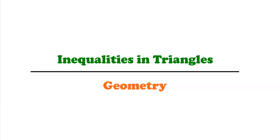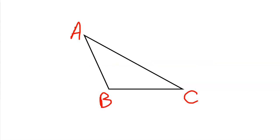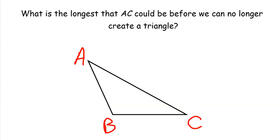The first question we're going to ask is one that is actually very foundational, and we haven't really asked ourselves up until this point in the course: what's the longest that AC could be before we can no longer create a triangle? Is it possible to have a set of segment lengths that don't even allow for a triangle to be created? Go ahead, pause the video, think on that for a little bit, and come back when you're ready.